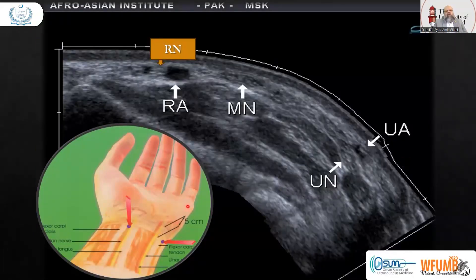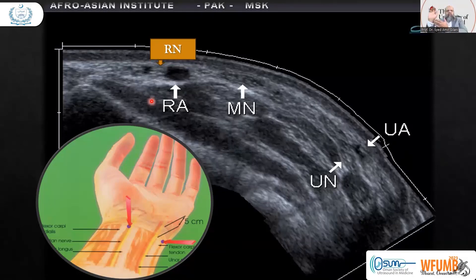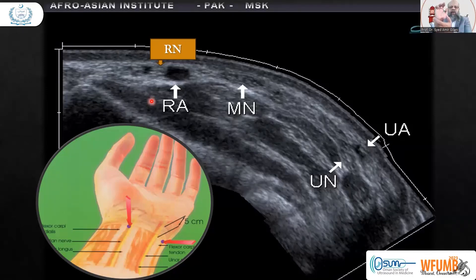Scanning the same nerves, we can see the ulnar artery and ulnar nerve, the median nerve in this panoramic view, and the radial artery and radial nerve. In the hand, on the radial side, along with the radial artery we find the radial nerve. The median nerve is in the middle and the ulnar nerve is on the ulnar side along with the ulnar artery. Here we have the longitudinal view of the ulnar nerve at the wrist, and a cut section.